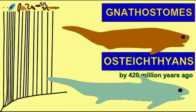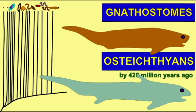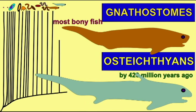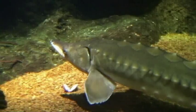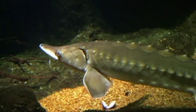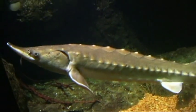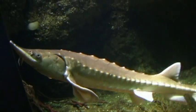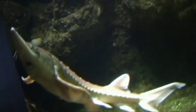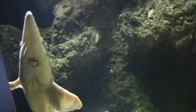A number of primitive groups of Osteichthians have survived until this day — the early bony fish such as Gars, Bowfin, and Sturgeons. And obviously the most advanced group of bony fish, known as the teleosts, is quite successful today.